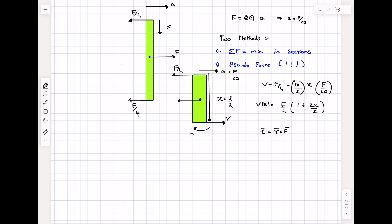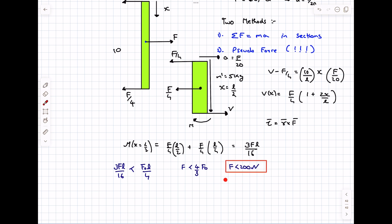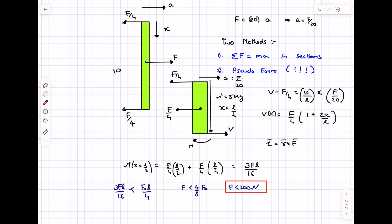At x = L/2, the section has mass 5 kg (half the 10 kg rod), so the pseudo-force on it is 5 × F/20 = F/4. The bending moment at x = L/2 is then: torque from the end tension F/4 × L/2 plus torque from the other F/4 × L/4, which simplifies to 3FL/16. To ensure the rod does not break, we need 3FL/16 < F₀L/4, which gives F < (4/3)F₀. With F₀ = 150 N, the rod will not break as long as F < 200 N.